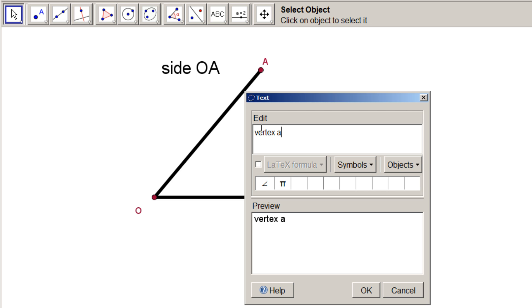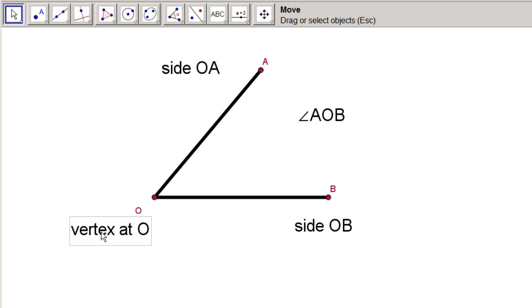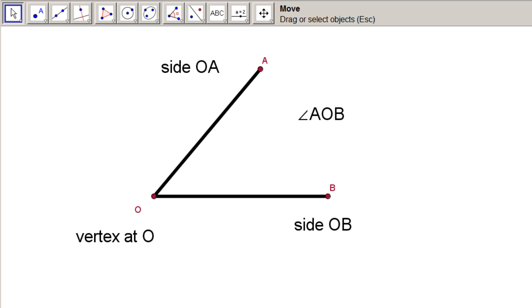Remember, if the text isn't exactly where you want it, just choose the Move tool. That's an arrow icon on the far left and reposition it, like so.